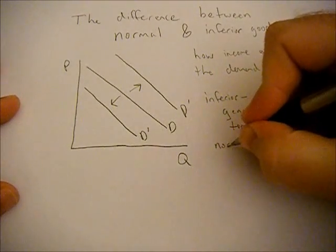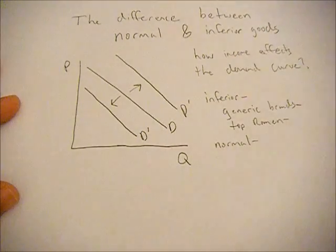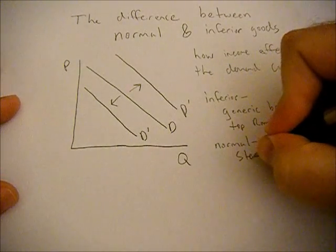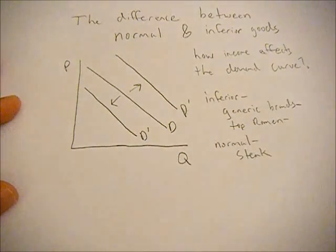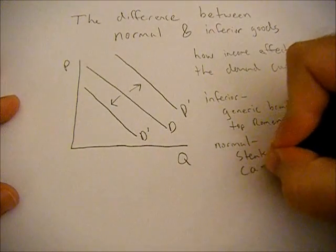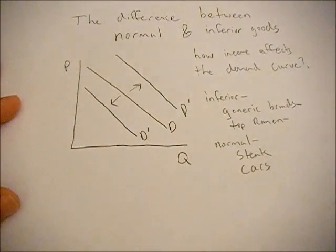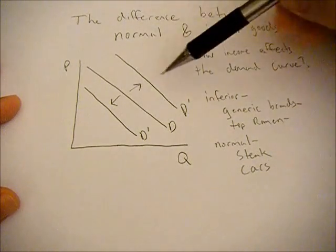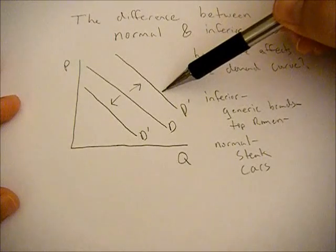Now if the good is normal, it behaves how you would expect it to. Maybe things like steak and cars. If your income goes up, you're going to consume more steak, you're going to see an increase in demand.